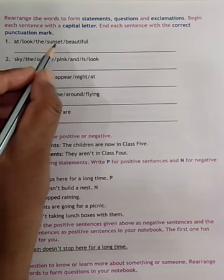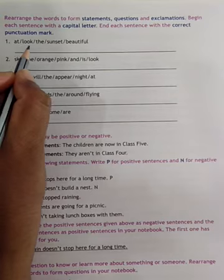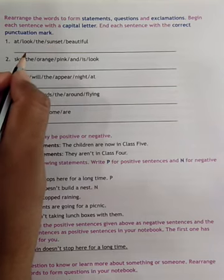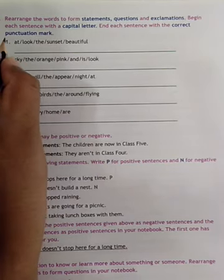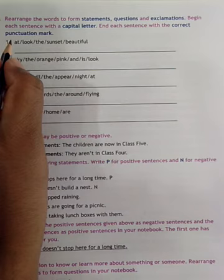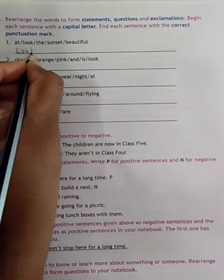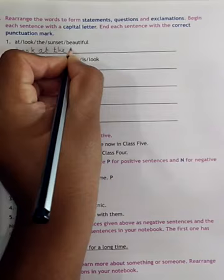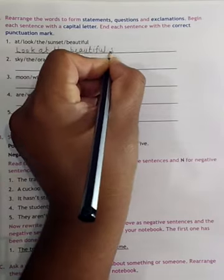At, look, the, sunset, beautiful. This is the jumbled words and it does not make any sense. Now, it's just a group of words. Now, we have to make it meaningful. So, first we, let's see, look at the beautiful sunset.